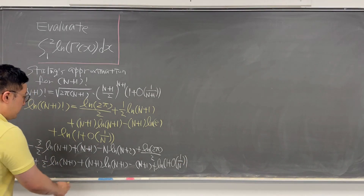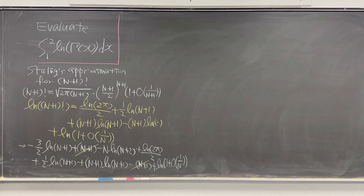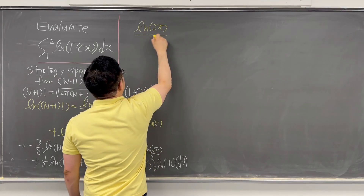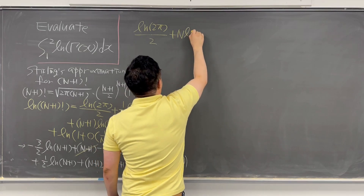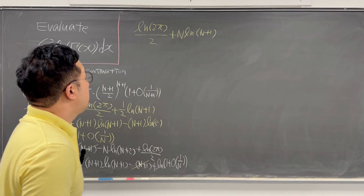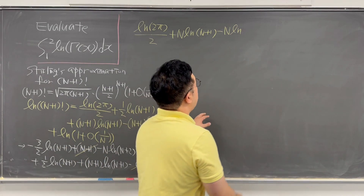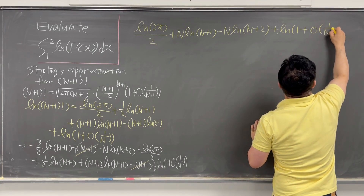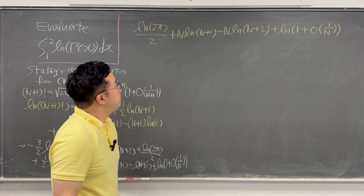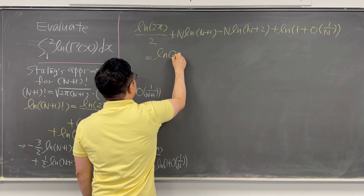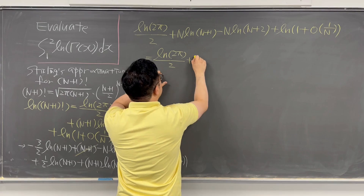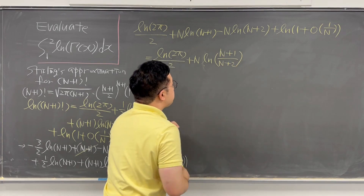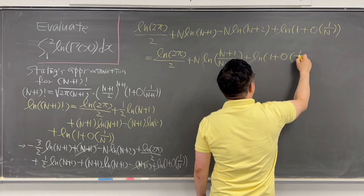This further simplifies to ln(2π)/2 plus N·ln((N+1)/(N+2)) plus ln(1 + O(1/N)). Rewriting ln((N+1)/(N+2)) as ln(1 − 1/(N+2)), and as N→∞ this gives ln(2π)/2 plus the limit as N→∞ of N·ln(1 − 1/(N+2)).